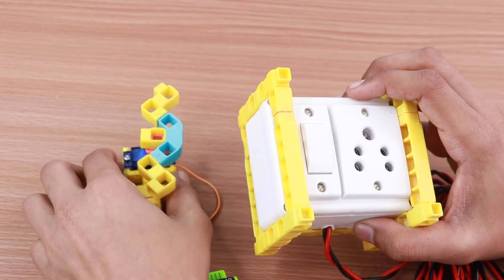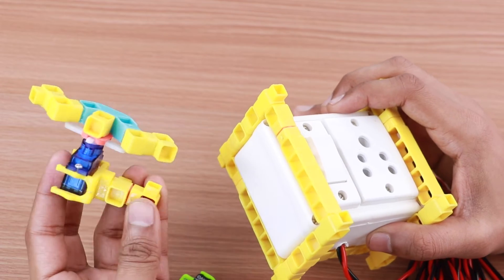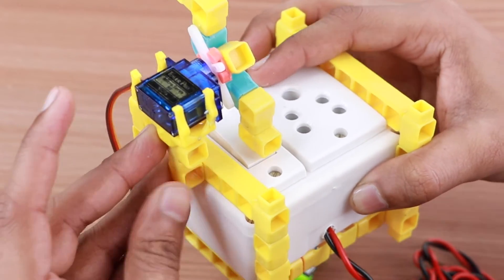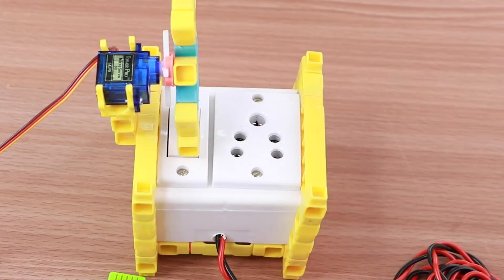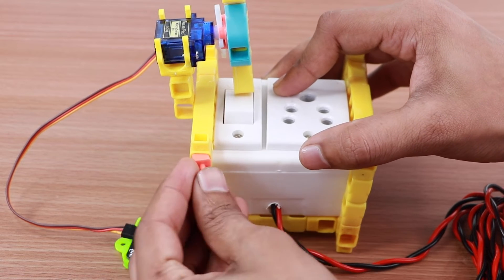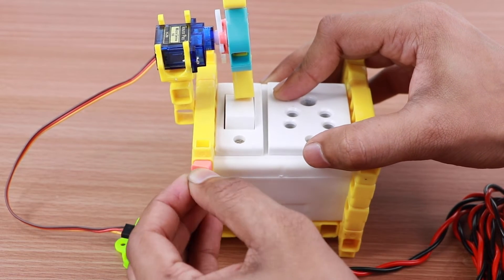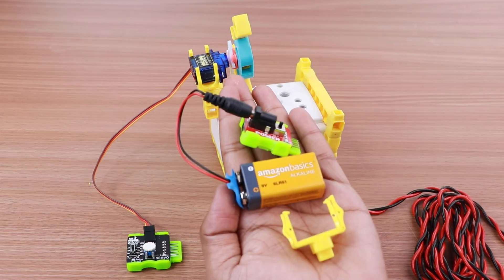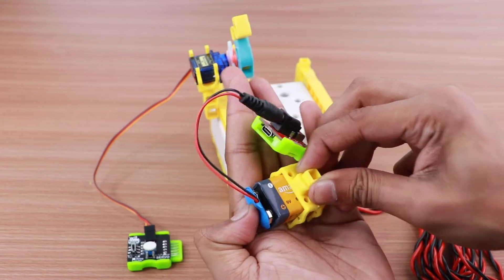Attach the mechanism to the switchboard. Add a blocks holder to the board to attach the blocks. Connect the battery to the structure through a battery holder.